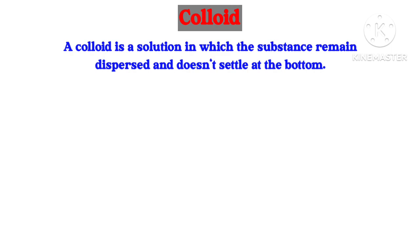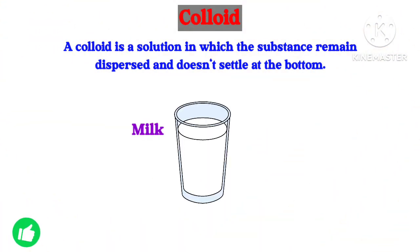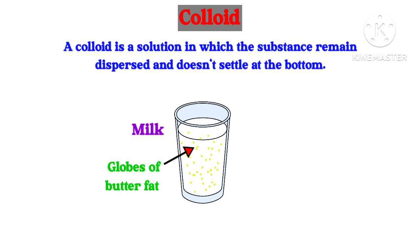Now let's see what is a colloid. A colloid is a solution in which the substance remains dispersed and does not settle at the bottom. In other words, a colloid is an intermediate state between a solution and a suspension. For example, consider milk. Milk contains globules of butterfat suspended throughout the liquid, so milk is a colloid, because the particles of milk are intermediate in size between those of a solution and a suspension.